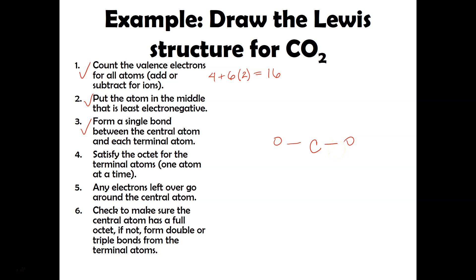Now I have to satisfy the octets of the terminal atoms, one atom at a time. I have four electrons and can go up to 16, so I add electrons to the first oxygen reaching 10, then continue to the second oxygen reaching 16. I ran out of electrons, so step four is done. Step five: any electrons left over go around the central atom — I don't have any, so step five is done.